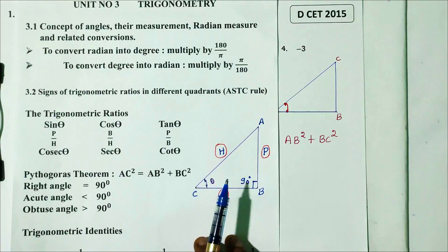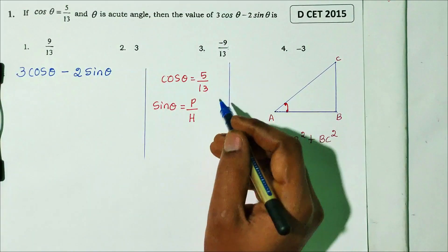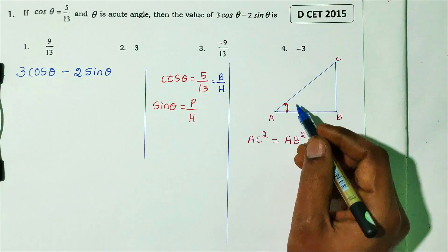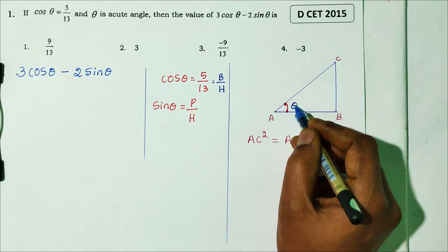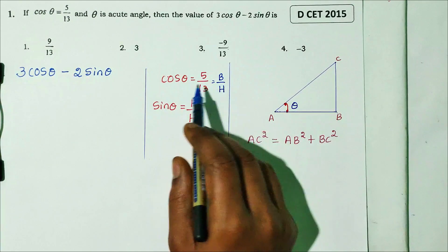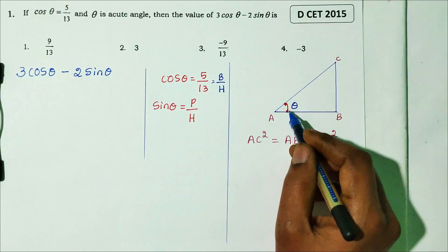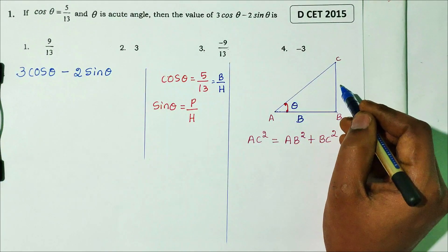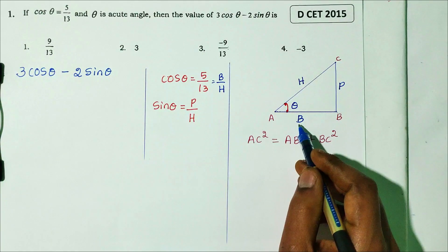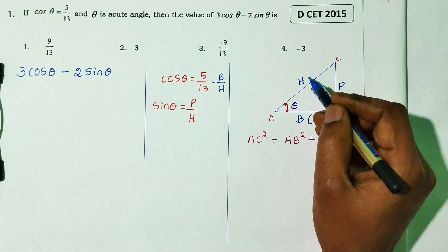We need to find sinθ. We connect this to cosθ: cosθ equals base divided by hypotenuse. So we draw a right triangle where base is 5 and hypotenuse is 13. The opposite side is the perpendicular, which we need to find.